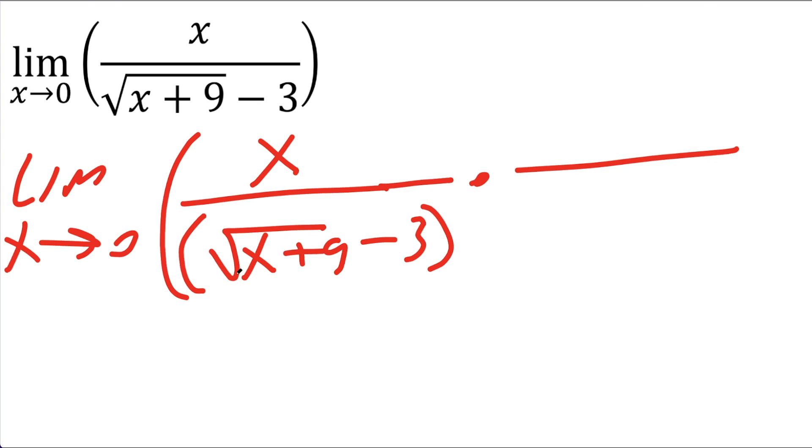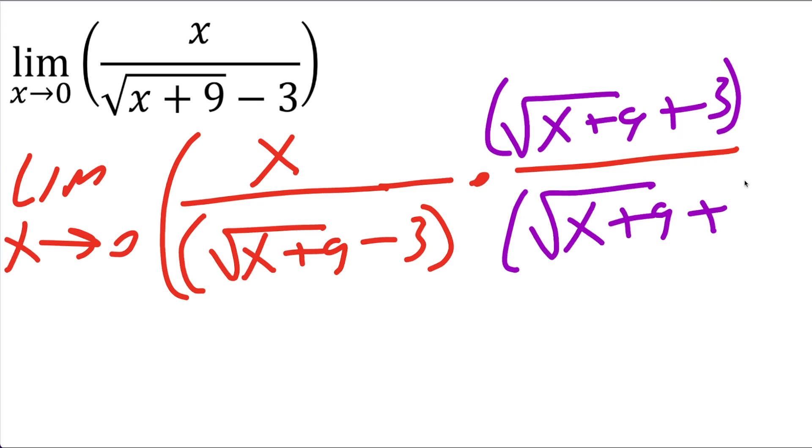So the conjugate is going to be this piece but instead of subtraction you're going to make an addition. So we'll say the square root of x plus 9 plus 3, I'm going to put a parenthesis, then we'll do this piece, square root of x plus 9 plus 3, and the plus 3 is outside of the square root. And we can close parenthesis.